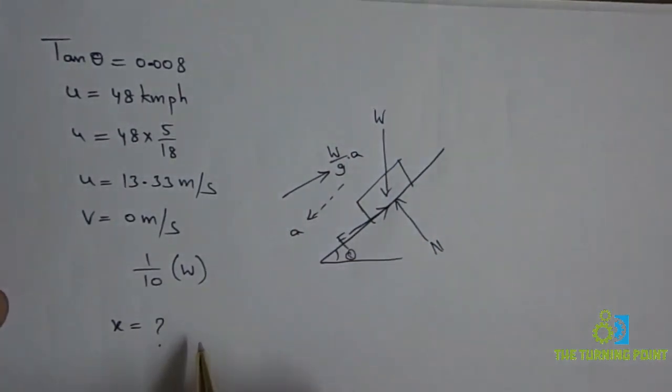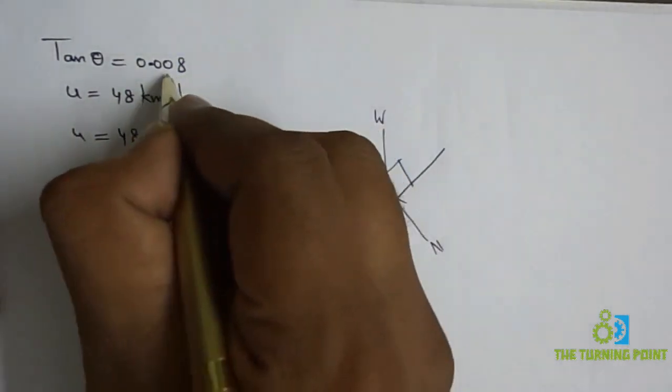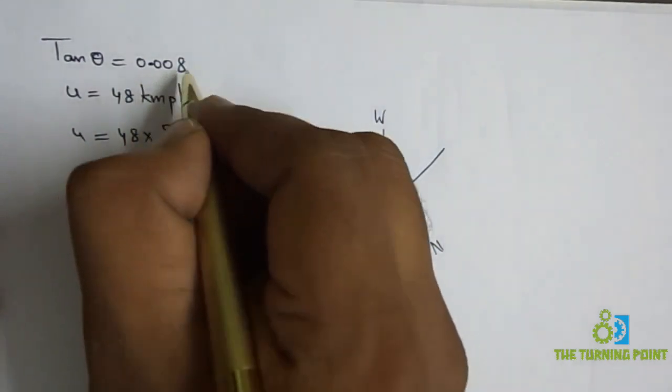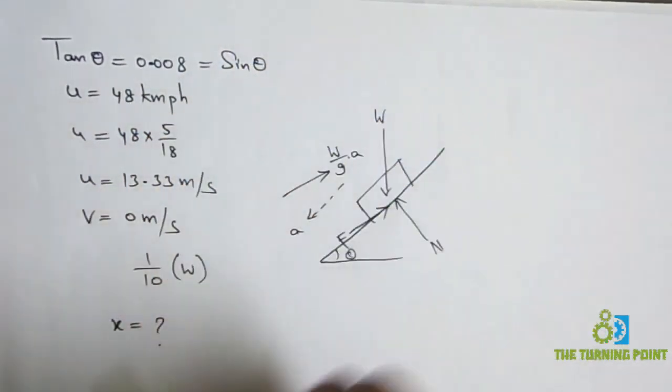We know that for small values of tan theta, tan theta will be equal to sin theta. It is very very small, 0.008, which is very very small. So it will be equal to sin theta.